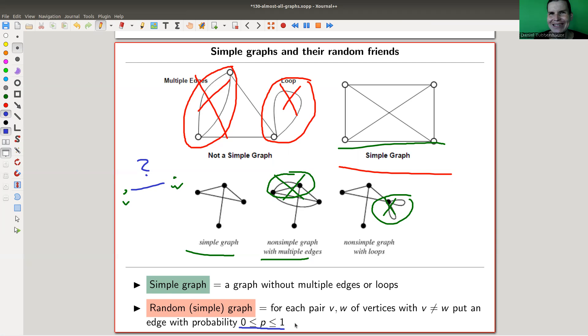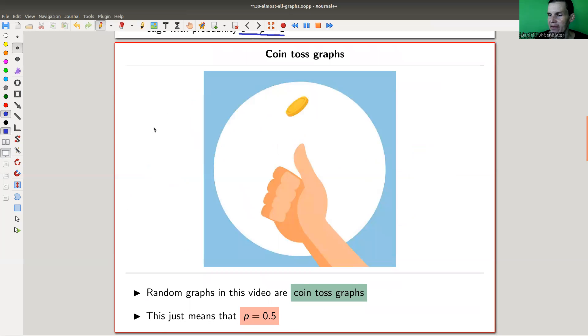A random graph should model a generic graph in some sense. If you imagine a bag with all graphs and you draw one out, on average it should be a random graph. Random graphs are average graphs, at least if you set p to be one half - the non-biased coin flip. What I really like are coin toss graphs, where p equals 0.5. Everything I say works for other probabilities as well, but let's stick with coin toss graphs.